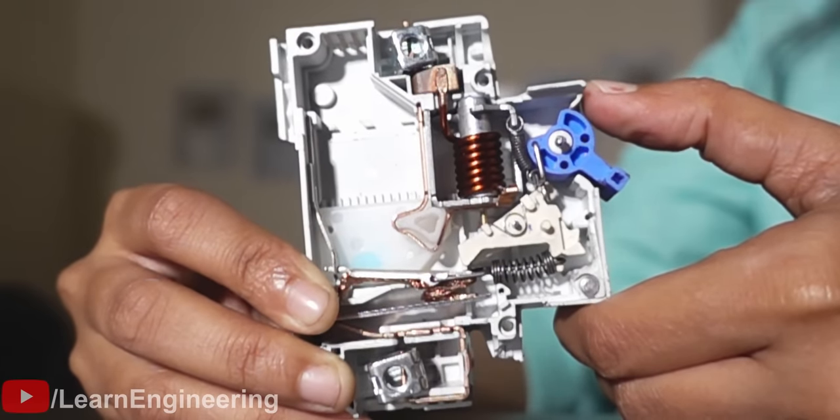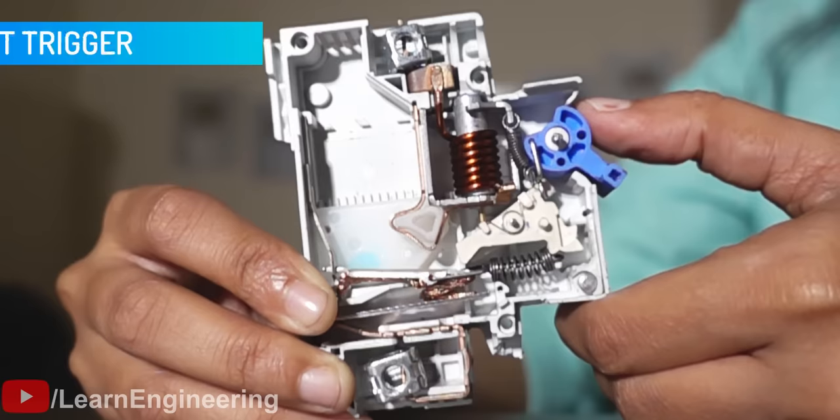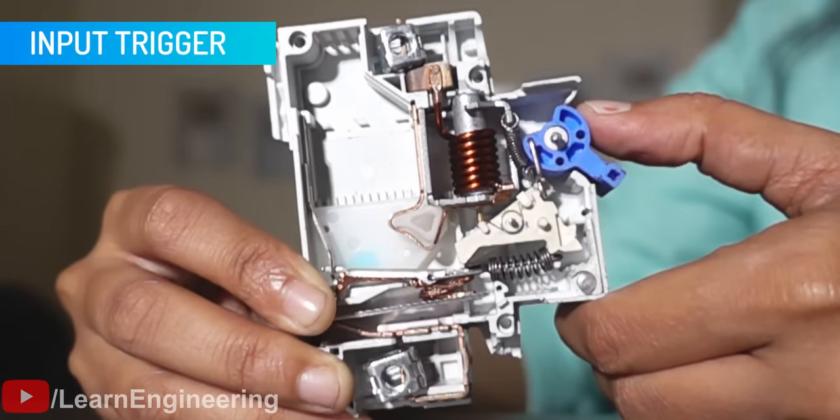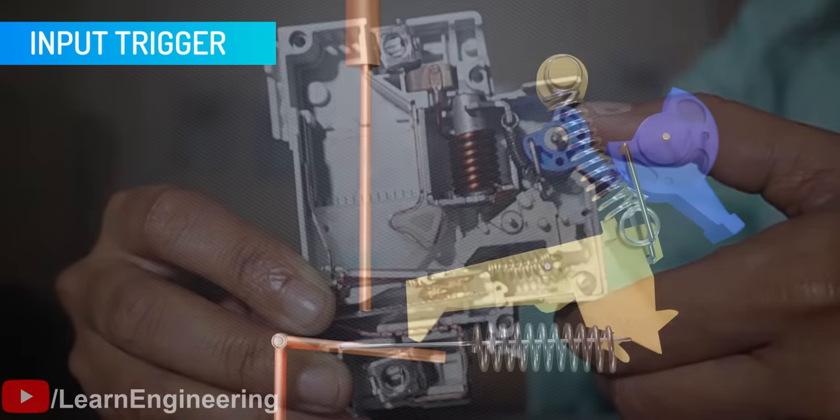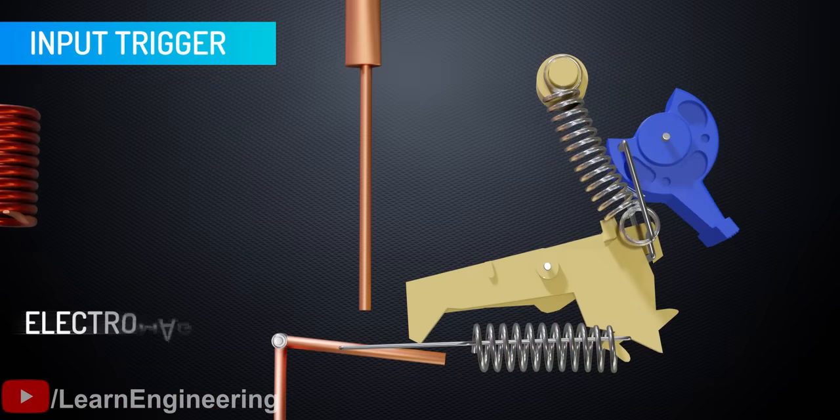Now, the only question is, how can we generate this small input trigger, or input motion, when a fault occurs? The best answer is, with an electromagnet.